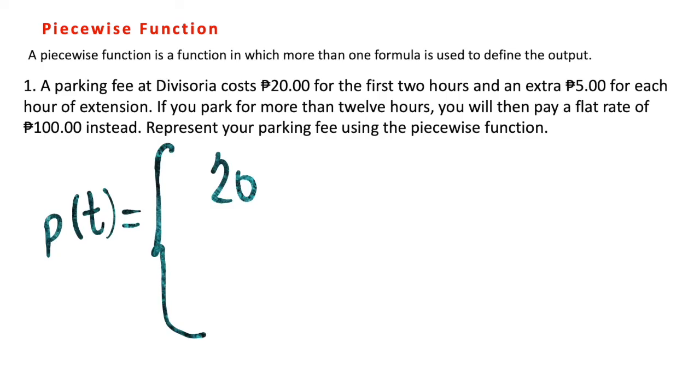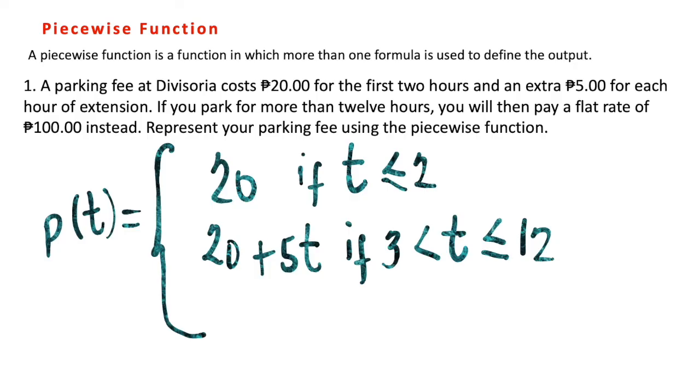For the first rule, we write 20 for the first two hours, when t ≤ 2. For the next rule, we pay extra 5 pesos for extension, so we write 20 + 5t, and the condition is if the time we spend is greater than 2 but less than or equal to 12 hours. Our last rule: we pay 100 pesos if we exceed more than 12 hours. This is how we write a rule for this type of situation.